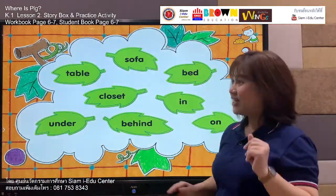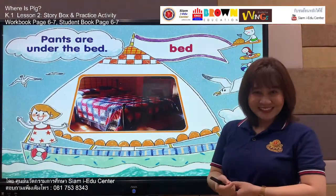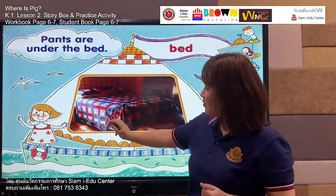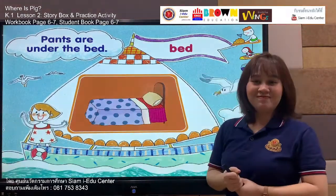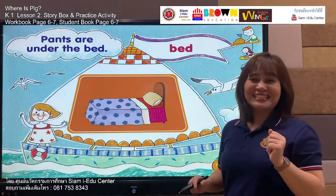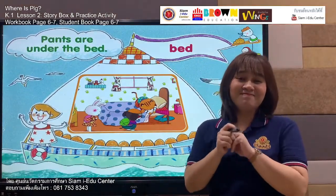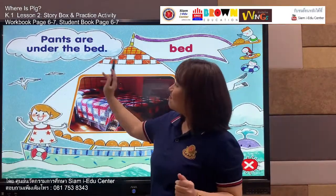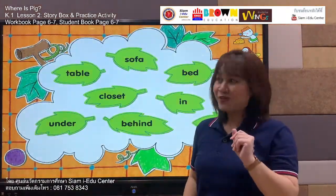Bed. Bed. Look — this is what we call a bed, with blankets and pillows. Listen and say: bed. Your turn — bed. Very nice! And the sentence: pants are under the bed. Say with me: pants are under the bed. Your turn — pants are under the bed. Excellent! Next, let's move to the next word. Listen.